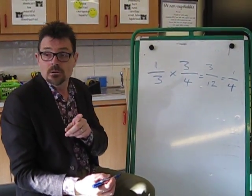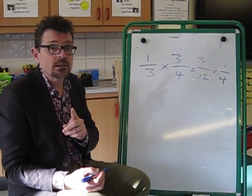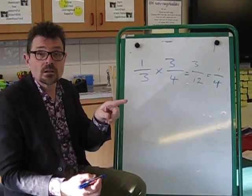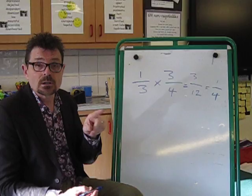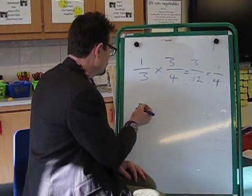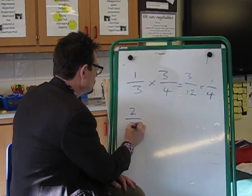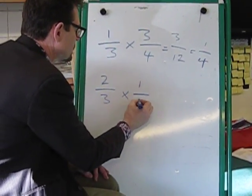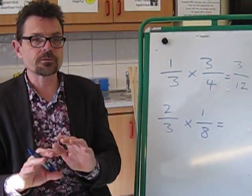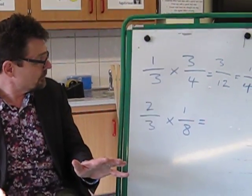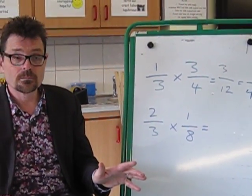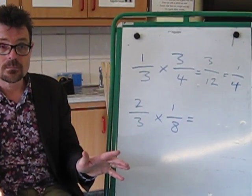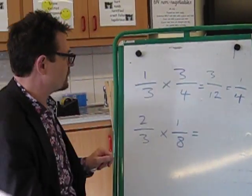I'm going to give you one to do at home now, and then I want you to freeze this film, have a go, and see whether you get the same answer as me. Okay, let's have a go: 2 thirds multiplied by 1 eighth. Okay, if you want to freeze yourself at home now and have a go at that. Okay, I'm unfrozen now. Let's do it together.